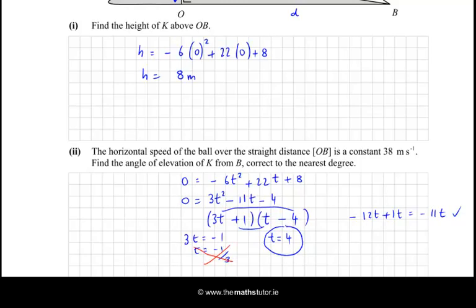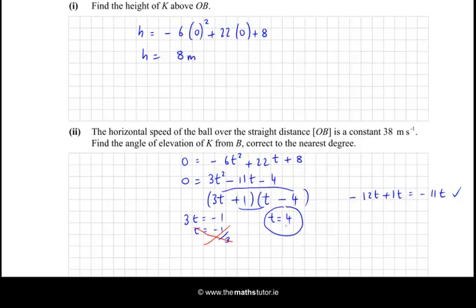Now, if it takes 4 seconds to get from O to B, well, to get from K to B, and it's going at a constant 38 metres per second, it's the horizontal speed, we just multiply 38 by 4, because if it's going at 38 metres every second, and it takes 4 seconds, we just multiply 38 times 4 is 152 metres, and that is the distance from O to B.